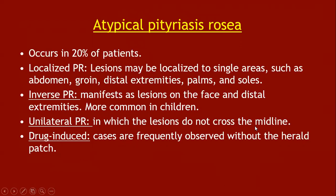Atypical pityriasis rosea is seen in 20 percent of cases. It can be localized to a single region such as the abdomen, groin, distal extremities, or palms and soles. Inverse pityriasis rosea manifests on the face and distal extremities rather than the trunk and is seen most commonly in children. Unilateral pityriasis rosea occurs when lesions do not cross the midline. Drug-induced cases are frequently observed without the herald patch.